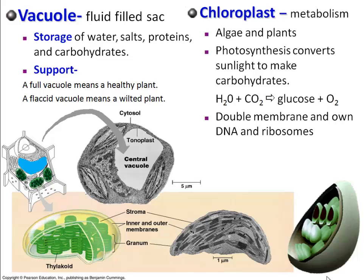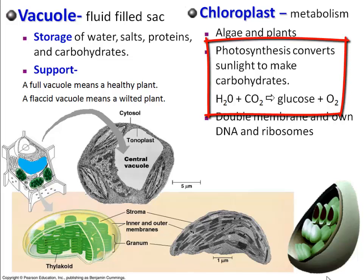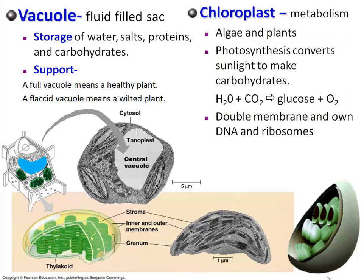The second organelle you should have noticed that was different is the chloroplast, and it's primarily a metabolism organelle. You'll find this in algae and plants — so anything that's an autotroph should have this. A chloroplast's primary job is photosynthesis. It converts sunlight into carbohydrates by taking water and carbon dioxide to produce glucose and oxygen, which is a waste product.